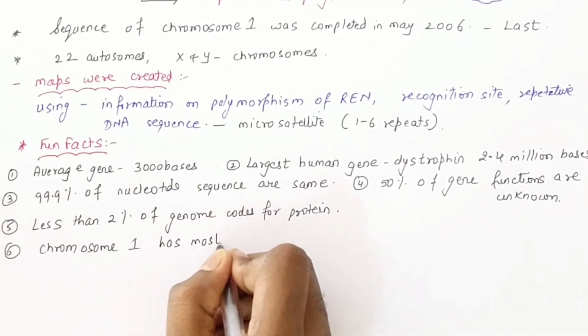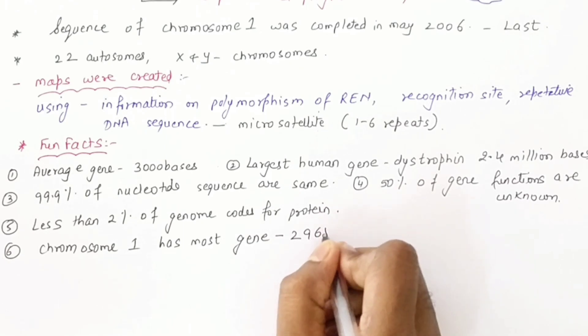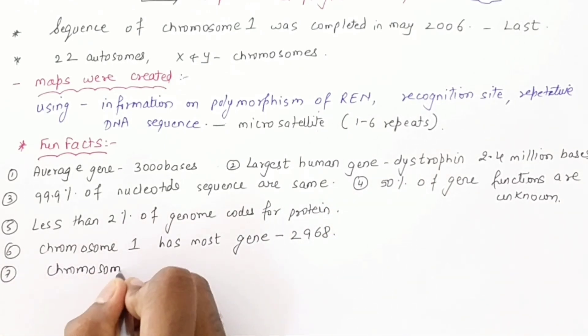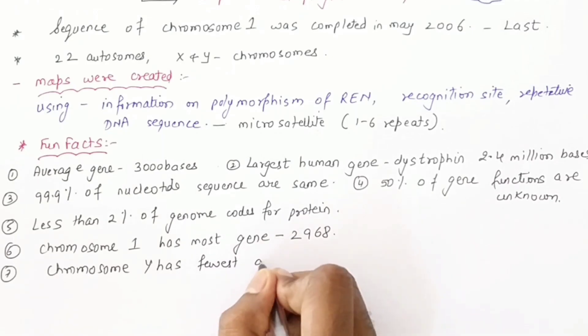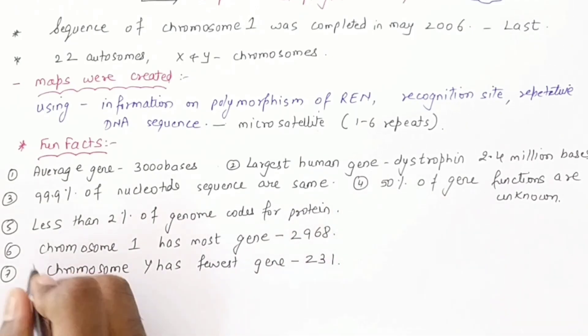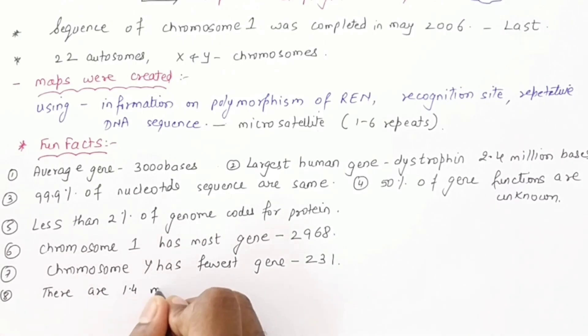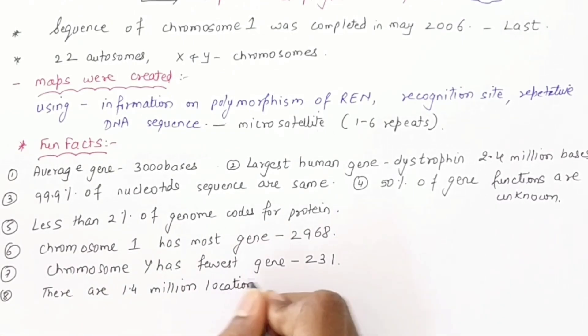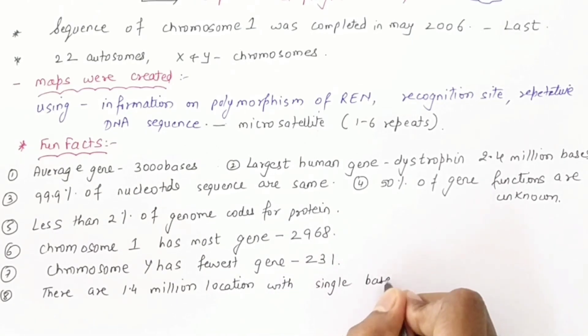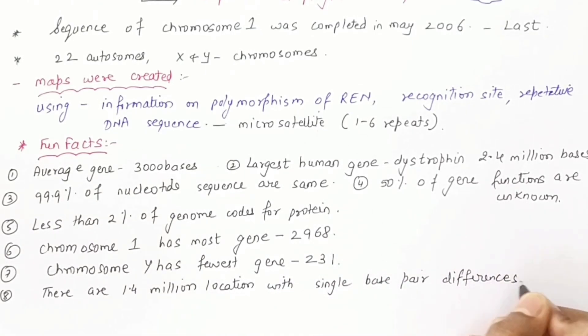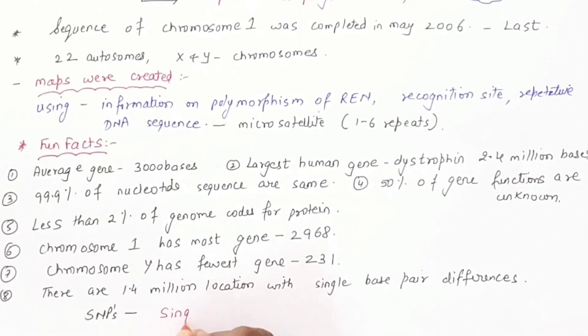Chromosome 1 has the maximum number of genes: 2,968. Chromosome Y has the minimum number of genes: 231. There are around 1.4 million locations in the genome where there is only one nucleotide difference — these are called SNPs, or Single Nucleotide Polymorphisms.